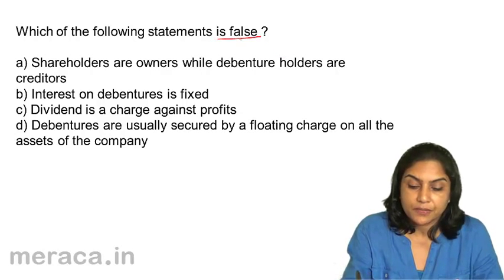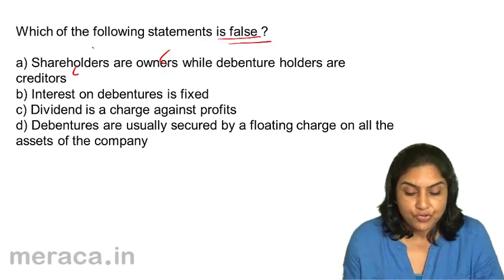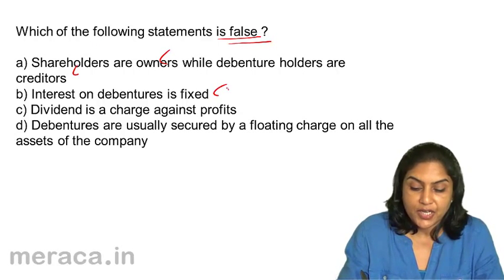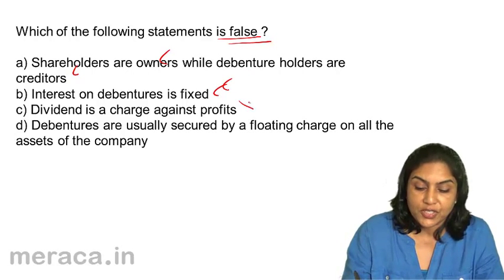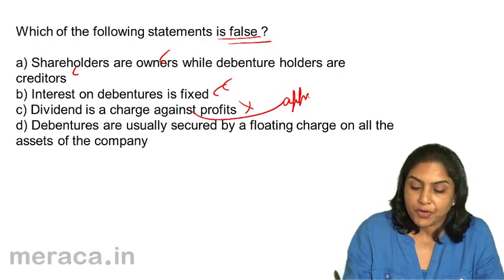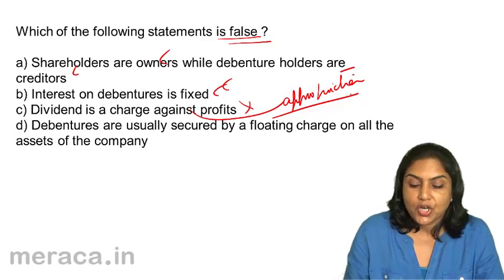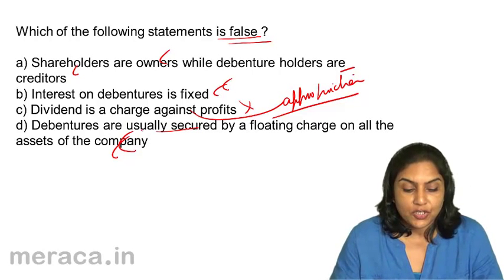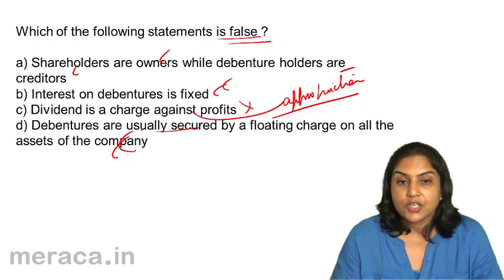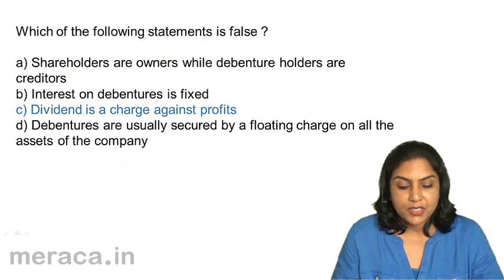C — dividend is an appropriation of profits, not a charge against profits. D — debentures are usually secured by a floating charge on all the assets of the company — that is also true. Therefore, which statement is false? C is false. The correct answer is option C. Dividend is a charge against profits is the false statement — dividend is actually an appropriation of profits. C is the correct option.